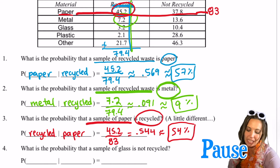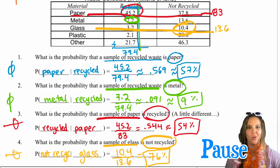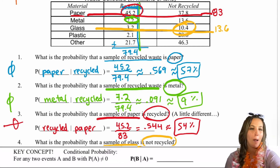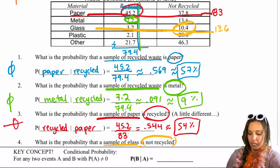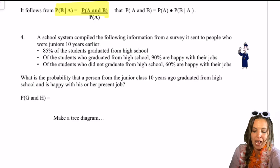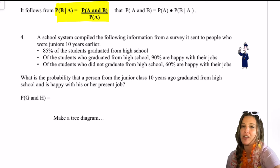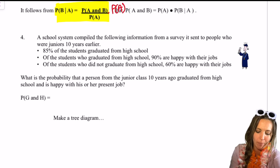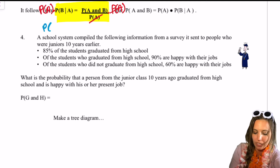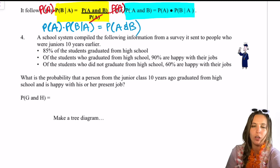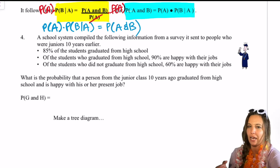What's the probability that a sample of glass is not recycled? Wow, 76% — so most glass doesn't look like it's recycled. The key concept here is that the probability of event B occurring given that event A occurs is really just the probability of A and B occurring divided by just the probability of A. We can use this to find the probability of A and B when we have conditional probability statements. If we solve for P(A and B), we multiply both sides by P(A), leaving us with P(A) × P(B|A) = P(A and B). It'll come to our advantage in just a moment.